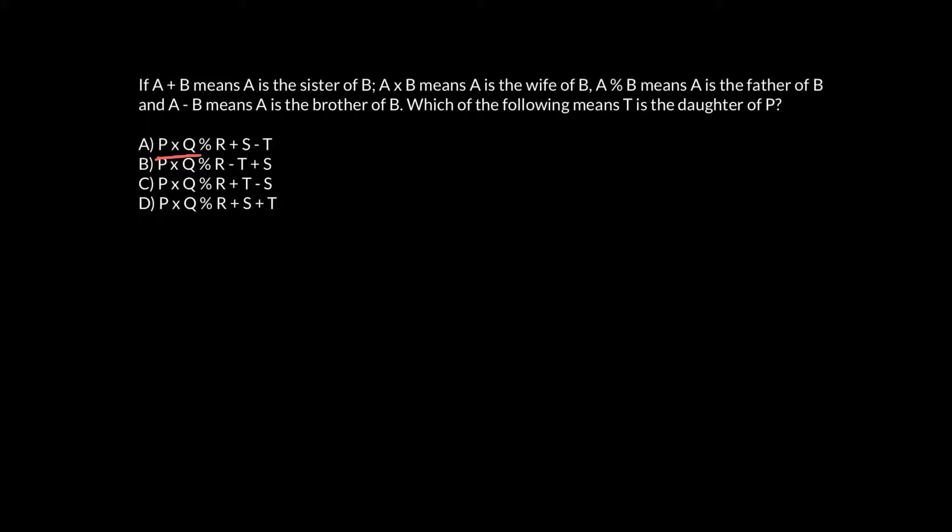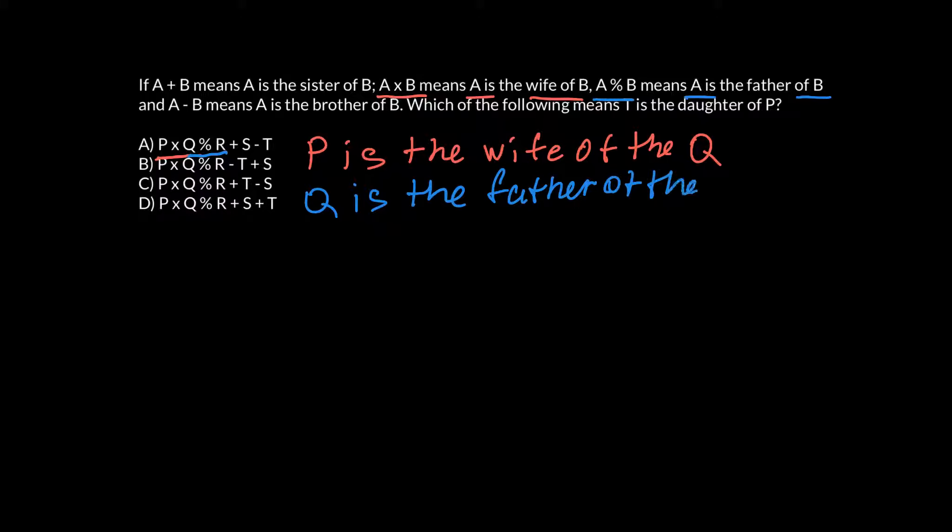So the first answer and the first pair, P times Q, means that the first is the wife of the second. So P is the wife of the Q. Next pair would be Q percent R. So this means that first is the father of the second. So Q is the father of the R.